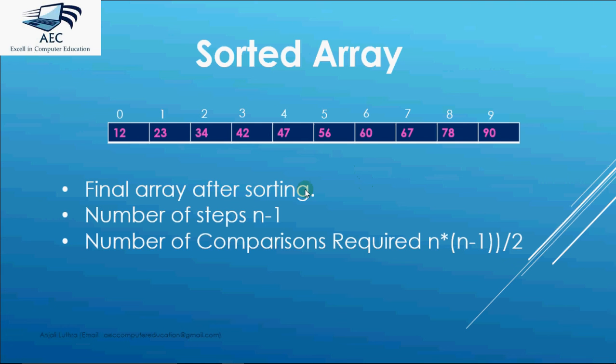As you could see the number of comparisons we require are n*(n-1)/2 because total there were n-1 steps. In first step we had one comparison. In second we had 2. In third we have 3.